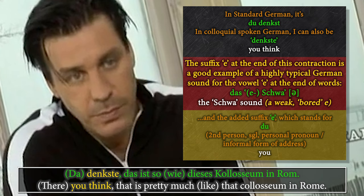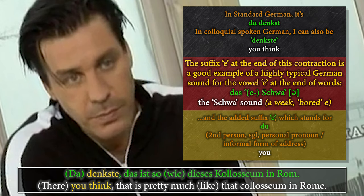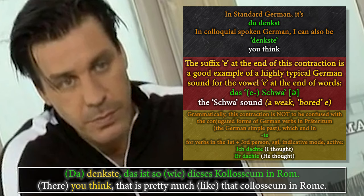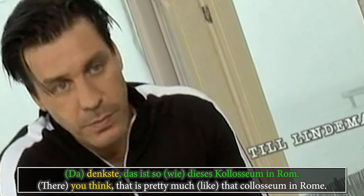This way of merging a verb and a personal pronoun is very typical and not limited to this specific case at all. However, don't confuse it with the normal way of expressing a verb in the Präteritum — the German simple past — which would be 'ich dachte', meaning 'I thought'. That also makes use of the Schwa, but it's a completely different context, because in that case the '-e' belongs to the conjugated form of the verb itself. It's not a contraction.